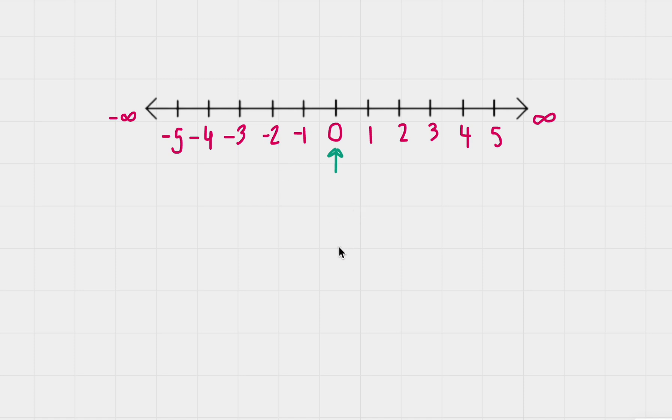For example, if you're thinking about a coordinate plane that has a vertical and horizontal number line, it looks like this. The center of this coordinate plane is 0, 0, and that is the origin. In this case, we're only looking at a horizontal number line, so the center is just zero.